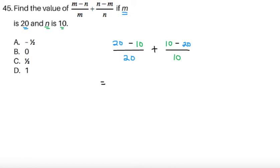So we just evaluate that. Dealing with the first fraction, 20 minus 10, that's 10. So 10 over 20. We can write this in simplest terms as 1 half. And then 10 minus 20, that's negative 10. And then we divide it by 10. So negative 10 over 10, that's negative 1.